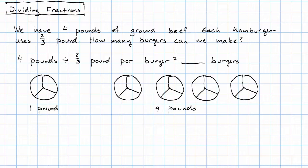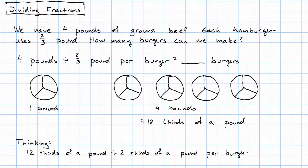Well, looking at my four pounds, I see that that's twelve thirds of a pound. So I can reimagine this problem as twelve thirds of a pound divided by two thirds of a pound per burger.